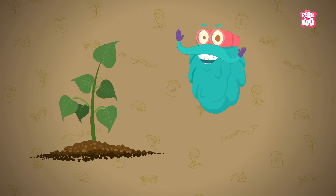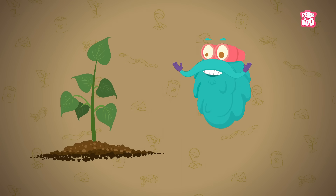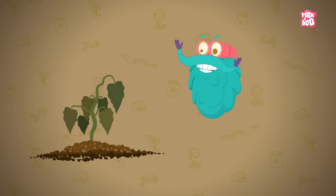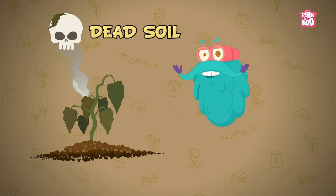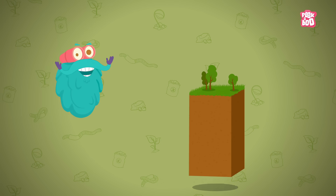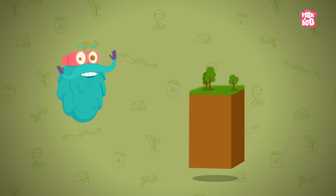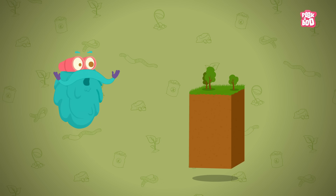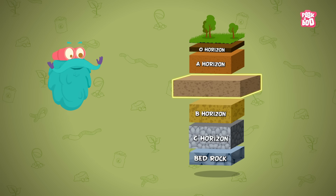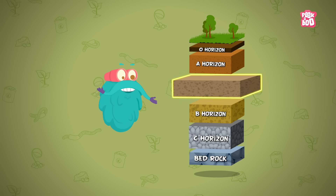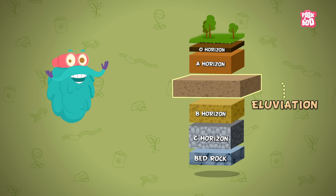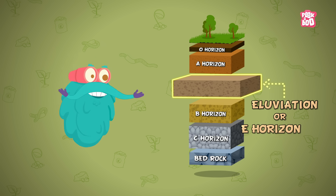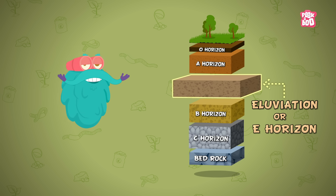Dirt is simply soil that has lost the ability to sustain life. It's dead soil. There is another layer of soil between the A and B horizon called the Eluviation layer or the E-Horizon.